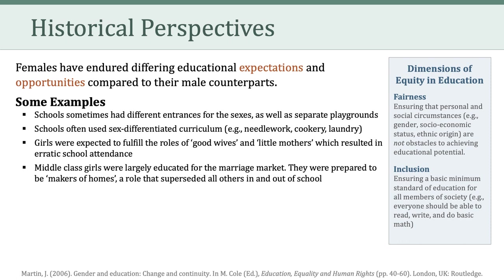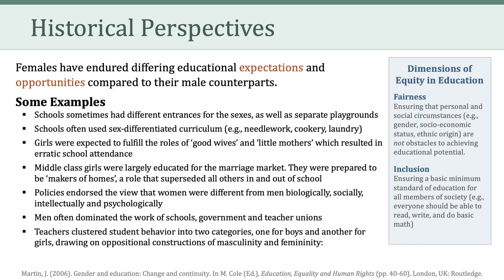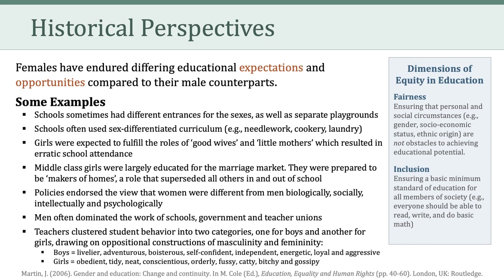Middle-class girls were largely educated for the marriage market — prepared to be makers of homes, a role that superseded all others in and out of school. Policies endorsed the view that women were different from men biologically, socially, intellectually, and psychologically. Furthermore, men often dominated the work of schools, government, and teacher unions. Finally, teachers often clustered student behavior into two categories — one for boys and another for girls — drawing on oppositional constructions of masculinity and femininity. Essentially, boys equaled livelier, adventurous, boisterous, independent, loyal, and aggressive behavior, whereas girls represented obedient, tidy, orderly, fussy, bitchy, and gossipy behaviors.